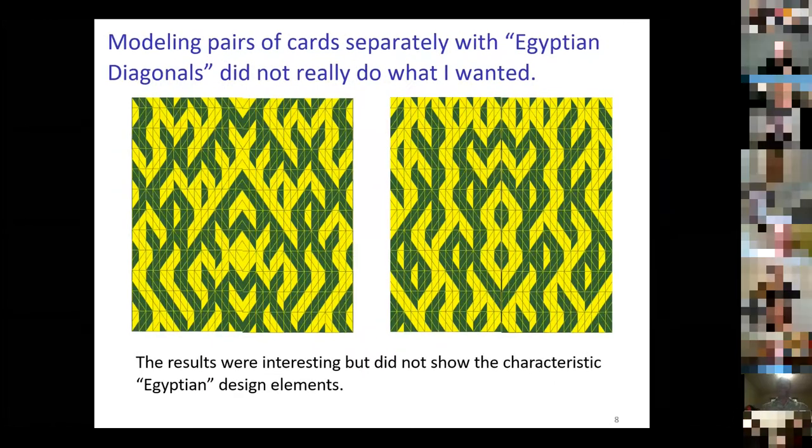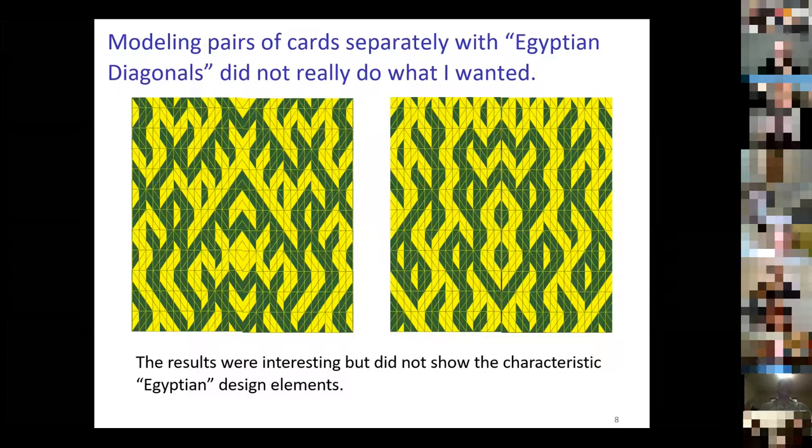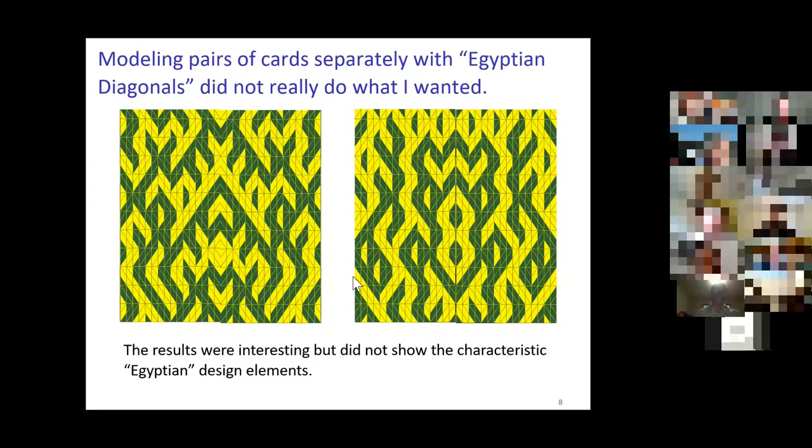For Egyptian Diagonals, they're interesting but they don't show that characteristic transition. They don't really show much in the way of diagonals—there's just a lot of sort of squiggles. Artistically it's not bad, but it's not characteristic of an Egyptian Diamond pattern.